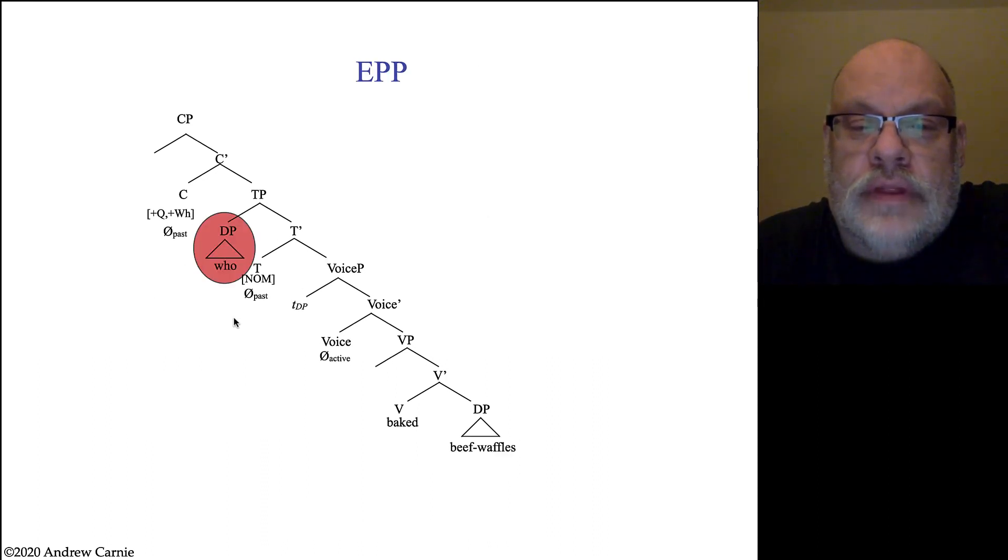This movement that we just did also means that we satisfy the EPP, right? So this element is in the specifier of the TP. The EPP says the specifier TP in English must be filled.